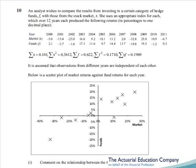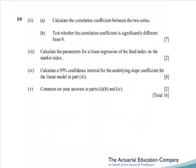The final question is of course on regression, and after last year's more complicated one this one's a dream. We're comparing percentage returns on a market compared with percentage returns on hedge funds, and we're given a scatter graph. We're asked to comment on the relationship between the two series — really asking us to comment on linear regression. Part 2a requires us to calculate the correlation coefficient r using the formula from the tables — standard stuff.